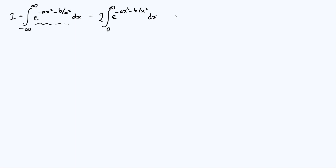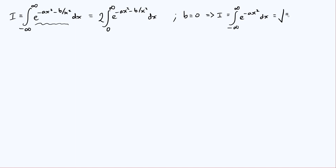One thing to note is we can easily evaluate this in the case where b is zero. If b is zero, then I is just the integral from minus infinity to infinity of e to the minus ax squared with respect to x. That's just the standard Gaussian integral — a pretty standard result — and it's root pi over a. We're going to take that as a given, and use this as our starting point: we know how to do this integral when b is zero.